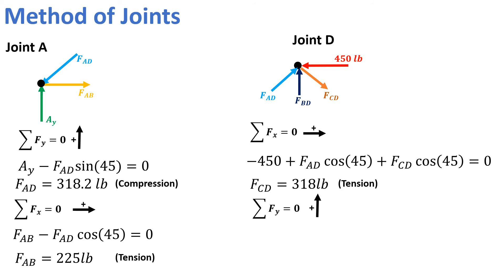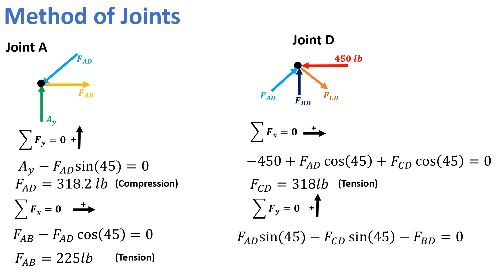Now we apply the equilibrium condition in the Y direction, taking upward as positive. Three forces act in the Y direction: the sine component of force in member AD, the sine component of force in member CD, and the force in member BD. The sine component of AD acts upward (positive), the sine component of CD acts downward (negative), and BD is taken in an arbitrary direction. From this equation, the force in member BD comes out to be zero, which means member BD is a zero-force member and supports no force.